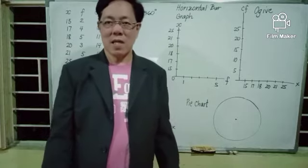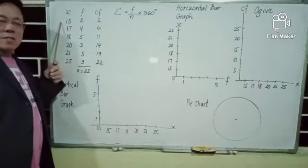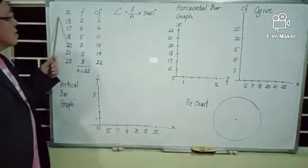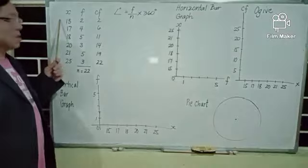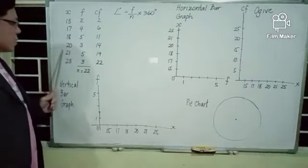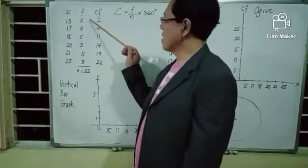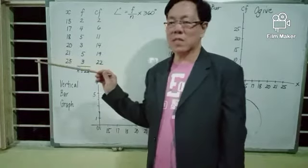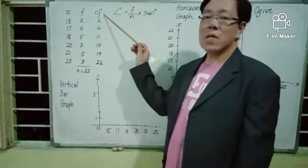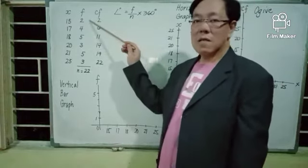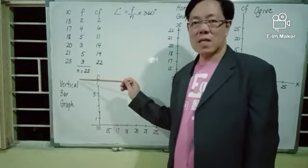We recall the given data from the last lesson. This is the tabular presentation of data we had in a frequency table. The scores are 15, 17, 18, 20, 21, and 25. The second column shows the corresponding frequencies of the scores, and the third column is for cumulative frequency — the running sum of the frequencies. The sum of the frequencies is the sample size, N, which is 20.